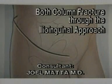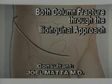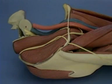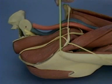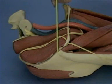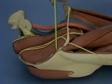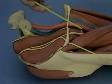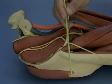Both column fracture operated through the ilioinguinal approach. The patient is positioned supine for the ilioinguinal approach, most often on a fracture table. The head is to the left and the foot is to the right. The surgeon stands lateral to the patient.